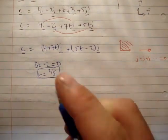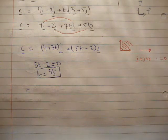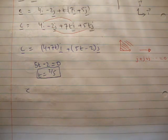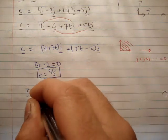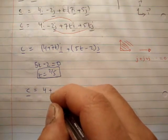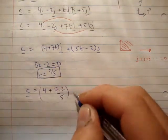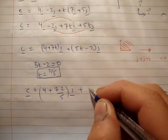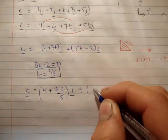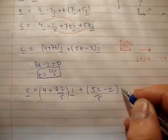Which, of course, means that c, one sec now, is t is equal to 2 fifths. So, therefore, c is equal to 4 plus 7 times 2 over 5 i plus 5 times 2 over 5 minus 2 j. Okay?